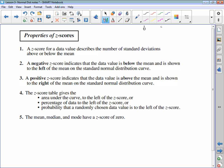Properties of z-scores: A z-score for a data value describes the number of standard deviations above or below the mean. A negative z-score indicates the data value is below the mean and is shown on the left. A positive z-score indicates the data is above the mean and is shown to the right. The z-score table gives the area under the curve to the left of the z-score.